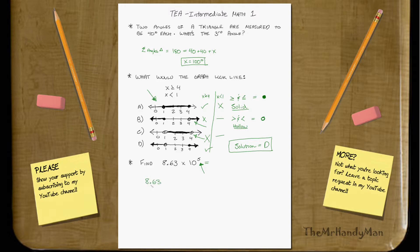8.63 is what we have. 1, 2, 3, 4, 5 dot here.